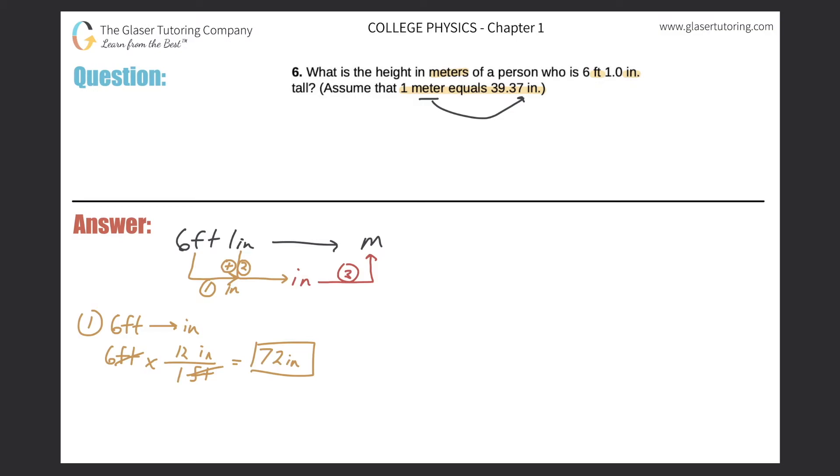Now for the second step, I'm going to take those inches that I just found, 72 inches, and then add one inch to it so I can find the total height of the individual in inches. That would just be simply 73 inches.